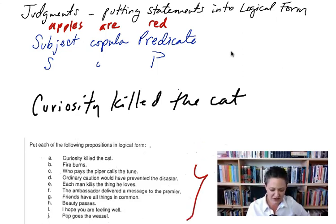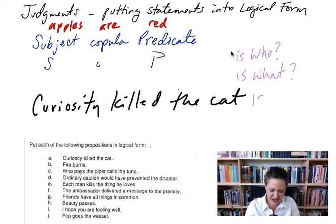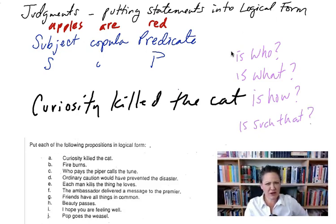So the job we have to do for this exercise is to fill in a copula. And one little rule I will give you that may be helpful in figuring out where the copula goes is to ask these questions. Who or is who, is what, is how, is such that, we might put in when. I don't think when might be in here.